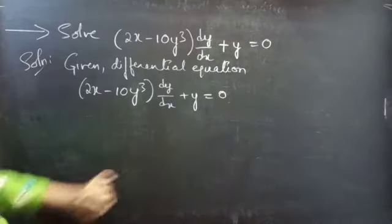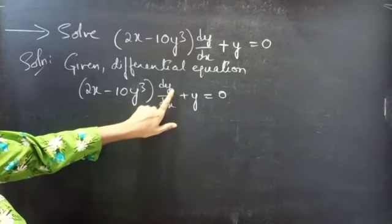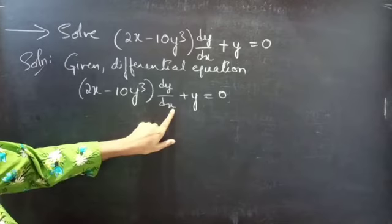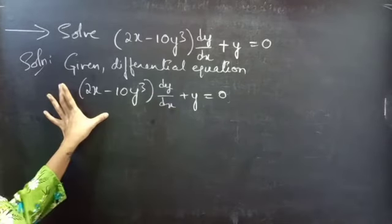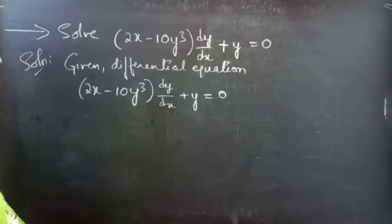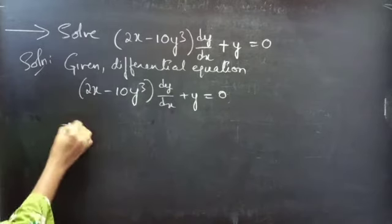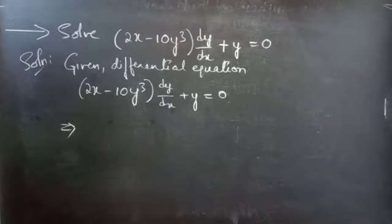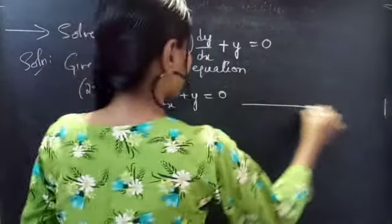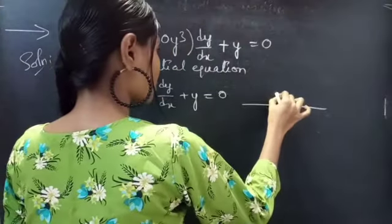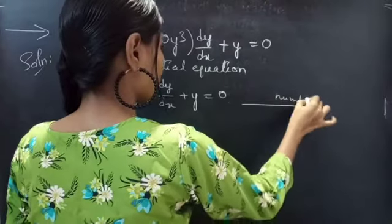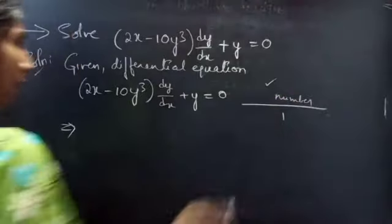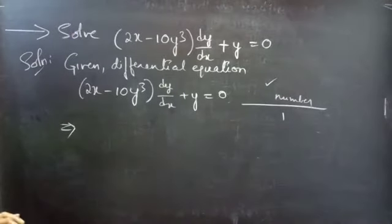In this equation, y is the dependent variable and x is the independent variable. We will change this equation. Note that you are having two terms. If a fraction involves a number of terms in the numerator and only a single term in the denominator, then it will be easy to split the fraction.